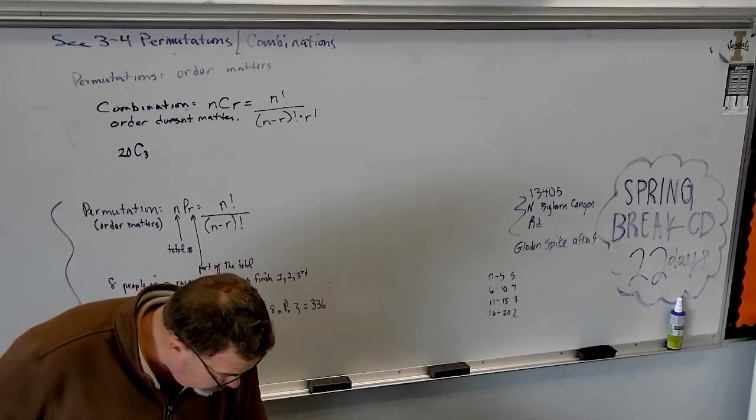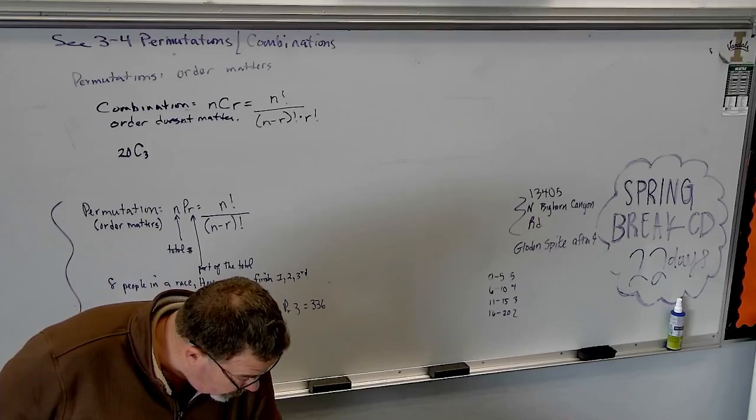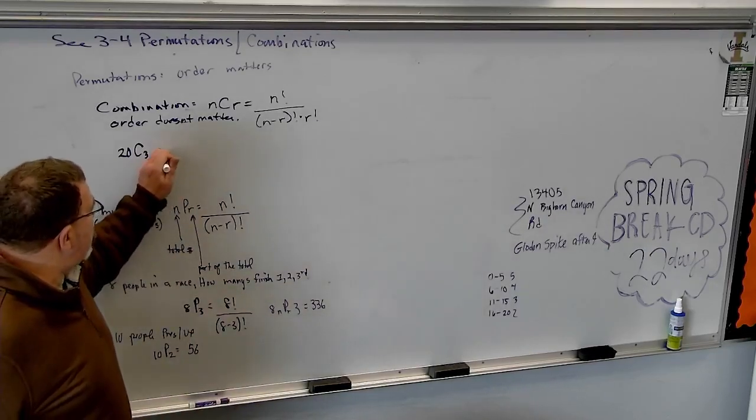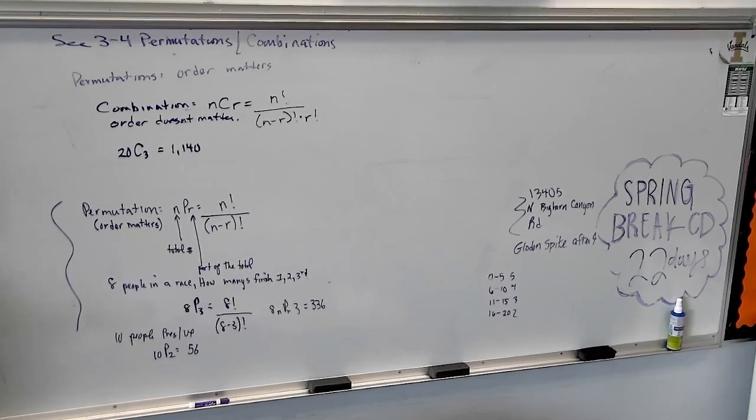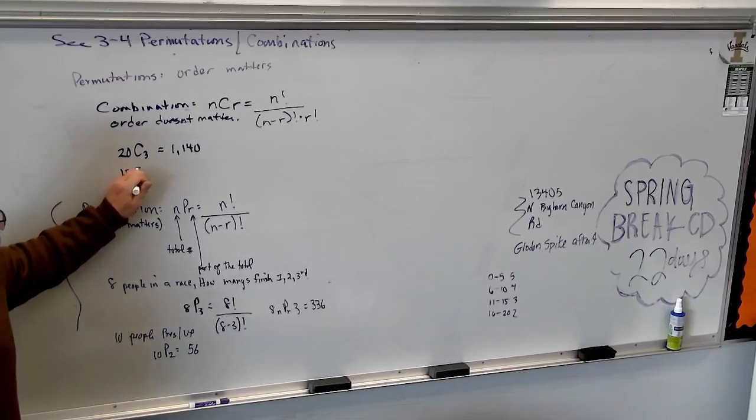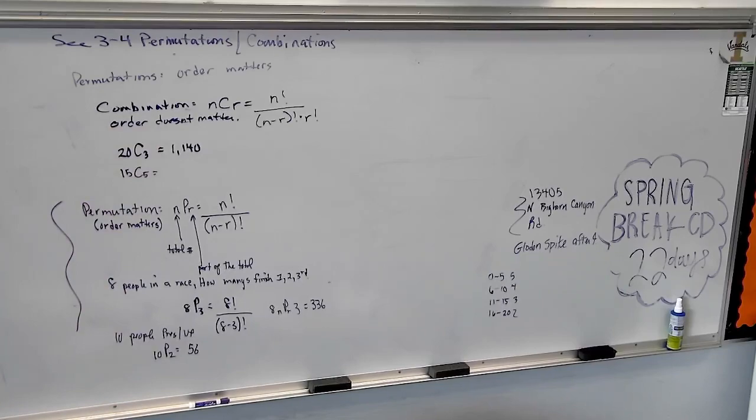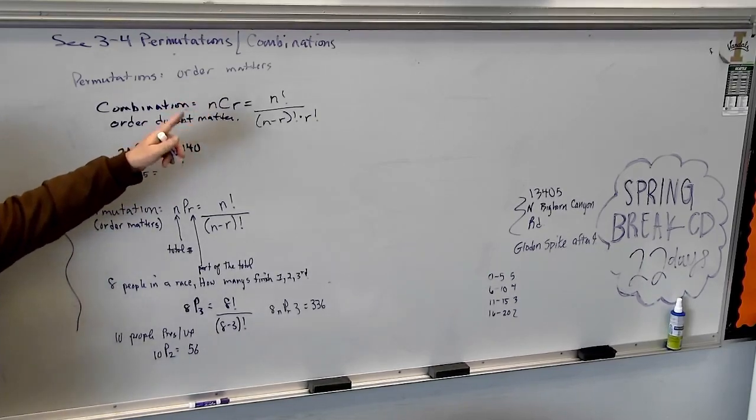So it would just be 20, combination, three. Order is not important. I just need three items. Here is your answer: 1,140 different ways I could make that pizza. A three-item pizza out of 20 ingredients. Here's another way to do it. I'm a florist. And I have to come up with a bouquet of five flowers. I have 15 different flowers to pick from. Does order matter? I just need five flowers. So I would say that that's 15, combination, five. Order doesn't matter. Just give me five flowers, please. Is everybody all right entering that? It's right where the permutation is.